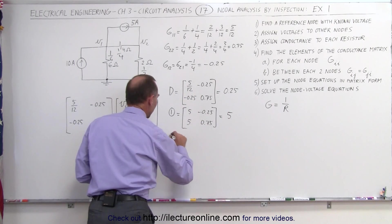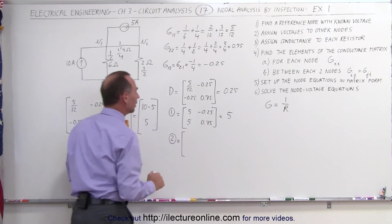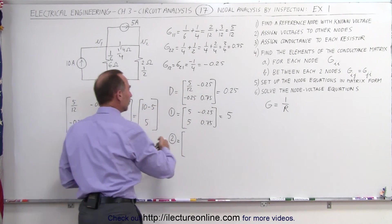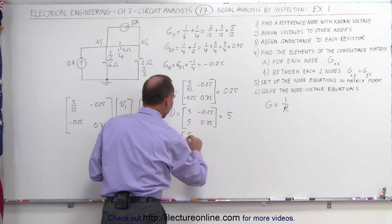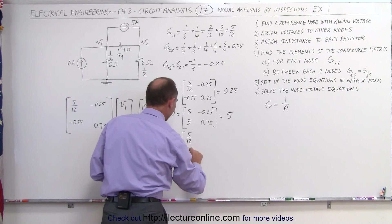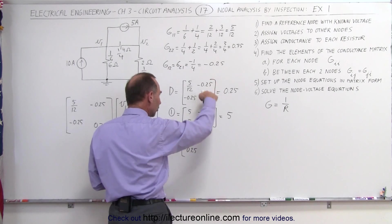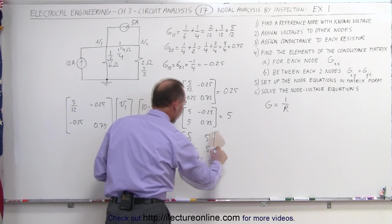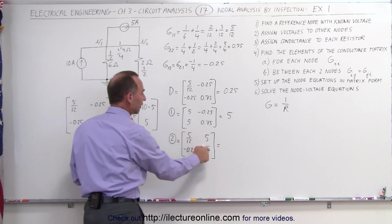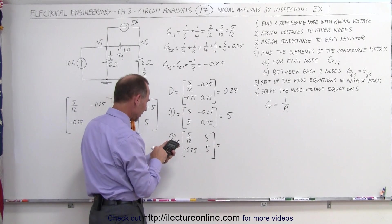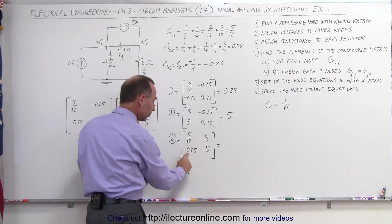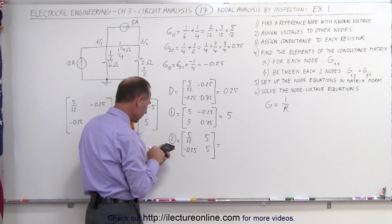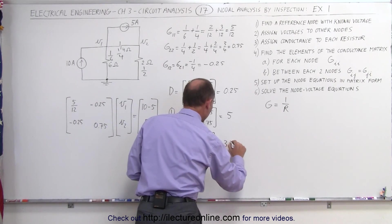The matrix that allows us to find the voltage of the second node. Now we replace the second column by the currents. The first column stays intact, so 5/12 and minus 0.25. And here, instead of writing those elements, we're going to write the current element. Again, that's 5 and 5. That is equal to 5 times 5, that's 25 divided by 12. And we subtract the product of those two, but of course this negative makes it a positive, plus 1.25, and we get 3.33.